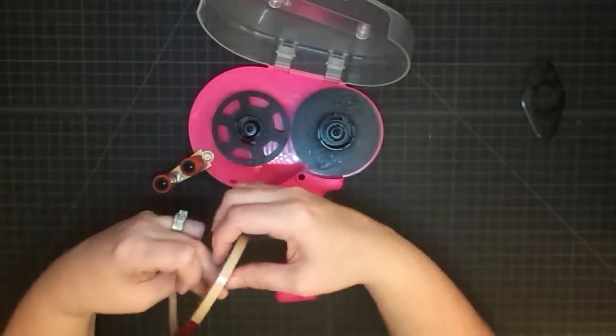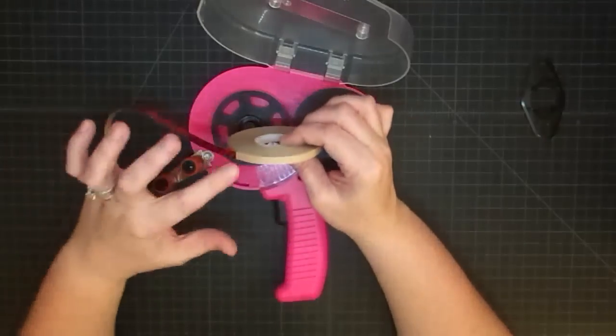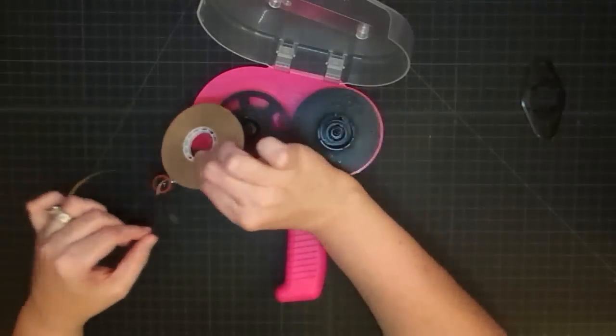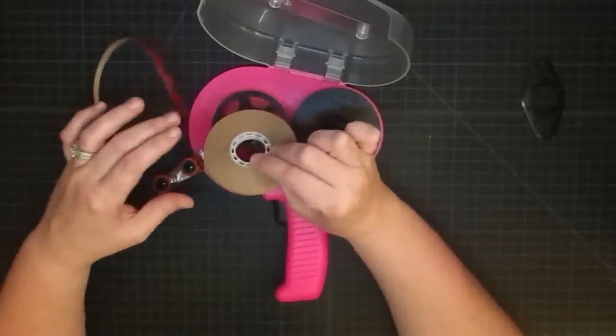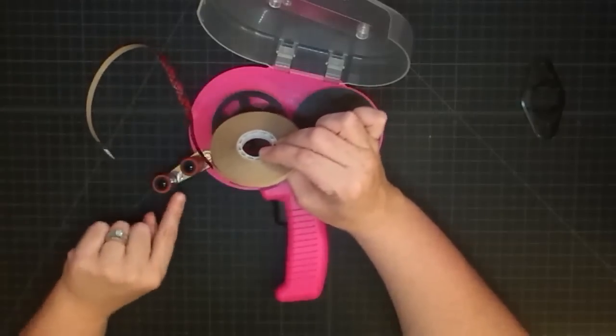I don't even worry about what the gun itself says. I just make sure that when I put this in, the sticky part is going to go the right way. Because if you have a reverse roll, that's going to matter. You want to make sure the sticky part is here.